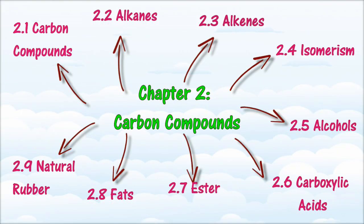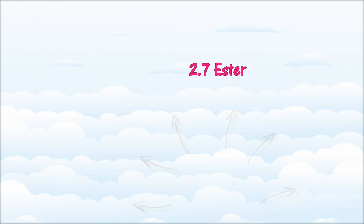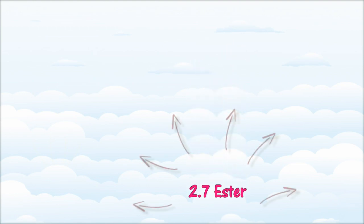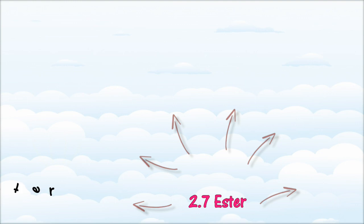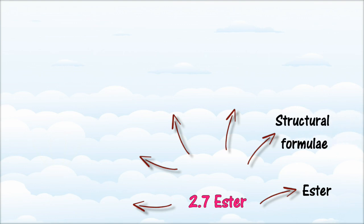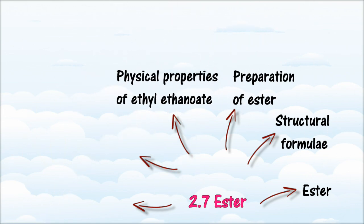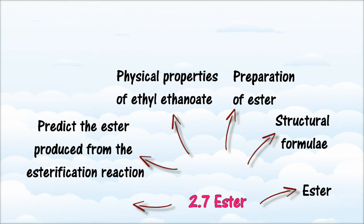In Section 2.7, we will learn about Esters. At the end of this section, you should be able to: state the general formula of esters; identify the functional group of esters; list the names and molecular formulae of simple esters; draw structural formulae of simple esters and name them using IUPAC nomenclature; describe the preparation of ester in the laboratory; state the physical properties of ethyl ethanoate; predict the ester produced from the esterification reaction; write equations for the esterification reactions; and state the natural sources of ester and the uses of ester in everyday life.